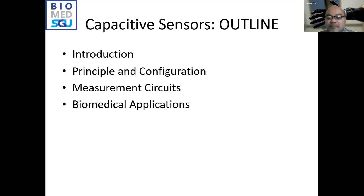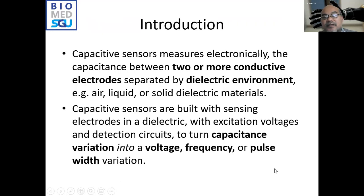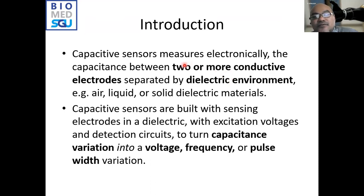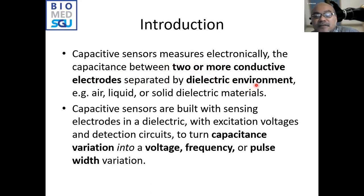Finally, we will discuss some of the primary applications that use capacitive sensors. A capacitive sensor measures electronically the capacitance between two or more conductive electrodes separated by a dielectric environment. The key point here is two or more conductive electrodes — sometimes three or four electrodes are used. These electrodes are separated by a dielectric environment, which consists of dielectric material that is insulating but also polarizes charges.